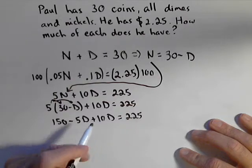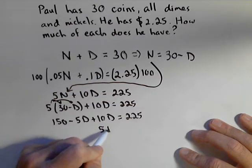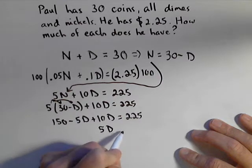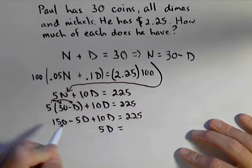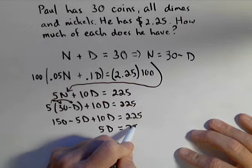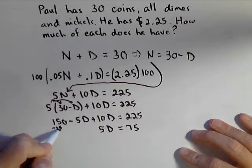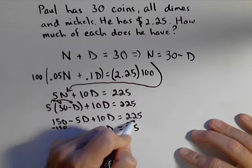Minus 5D plus 10D equals 225. Negative 5D plus 10D leaves me with just 5D over here. I'm going to subtract 150 off of each side. So subtracting 150 from 225 leaves me 75. So let's just make a note of what we did. We subtracted 150.